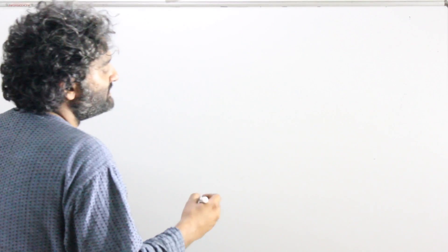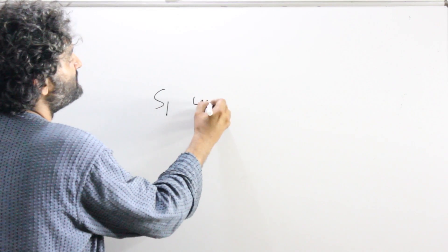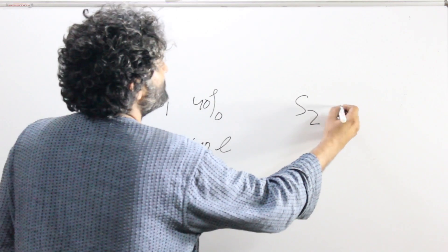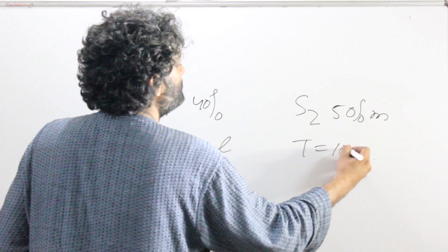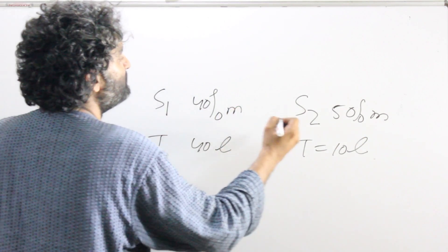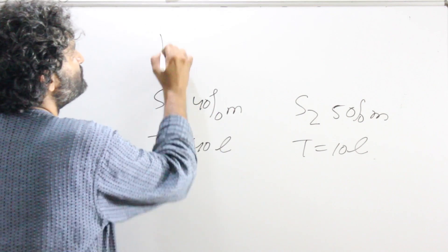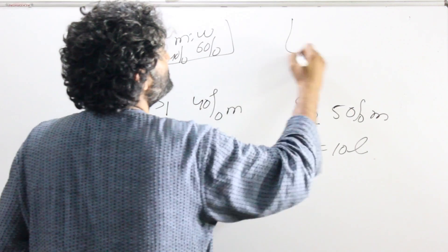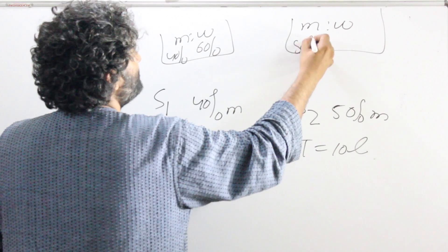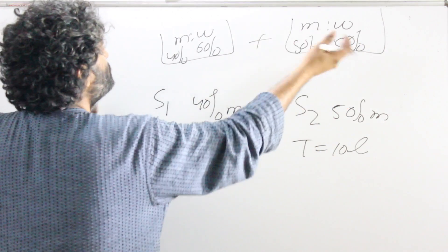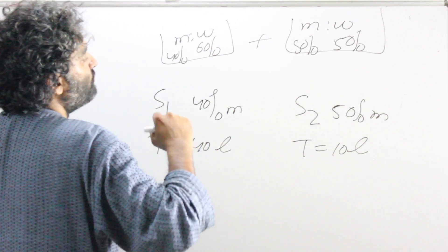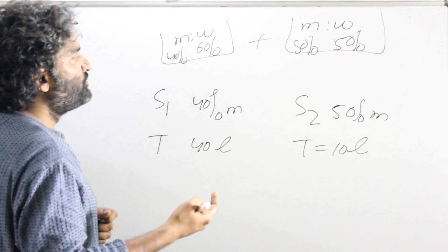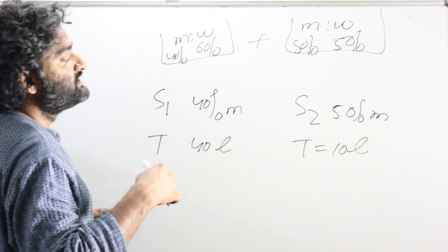Let's try one more example — this time with solutions. There is one solution with 40% milk and a total of 40 liters. There is another solution with 50% milk and a total of 10 liters. The 40% milk solution has milk at 40% and water at 60%; the 50% solution has milk and water each at 50%. These two are being mixed together, and the question is: what will be the milk percentage in the new solution?